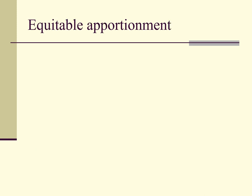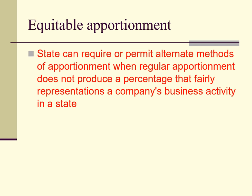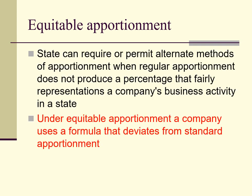As the last issue in this overview of the allocation and apportionment of income, let's discuss equitable apportionment. If a state's normal apportionment rules do not result in fair representation of the degree of a company's business activities in the state, the state may require or the taxpayer may request use of equitable apportionment. Under equitable apportionment, the taxpayer uses an apportionment formula that does not follow standard apportionment — for example, the formula may omit one or more factors if the inclusion of those factors serves to distort the apportionment of income.